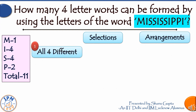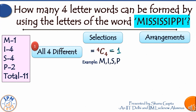Case 1: all four letters different. We have four choices of letters — M, I, S, and P — and we need to select all four. This can be done in 4C4 = 1 way; the only possible selection is M, I, S, P. These four different letters can be arranged in 4! ways. Together, selection and arrangement can be done in 1 × 4! = 24 ways.